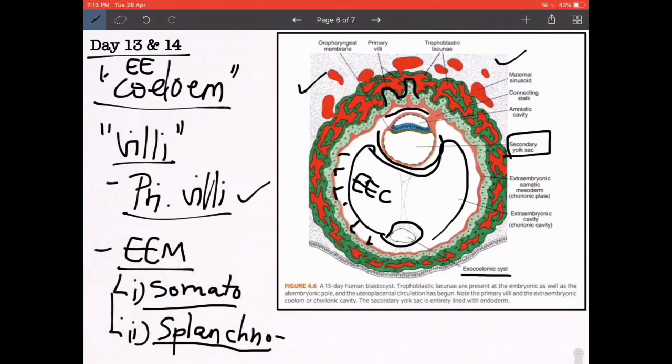Finally, there is a part of the extraembryonic mesoderm into which the coelom does not extend, and that is known as the connecting stalk. And this is going to give rise to the future umbilicus. More on that as we progress embryologically.